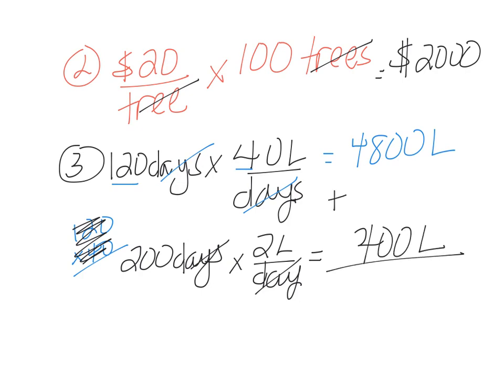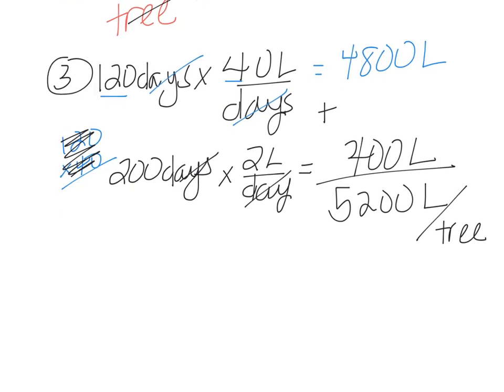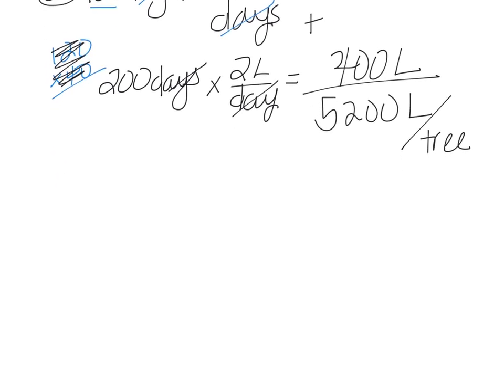And so we're going to add these two together. And we're going to end up with 5,200 liters of water per tree. It was actually days per tree in the original problem. I just wanted to make sure that we knew that it was 5,200 liters per tree for the year, per year.